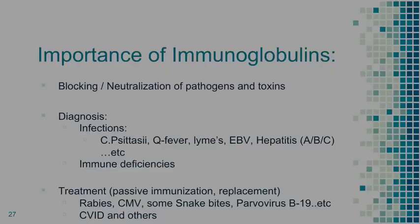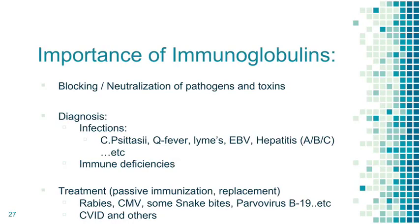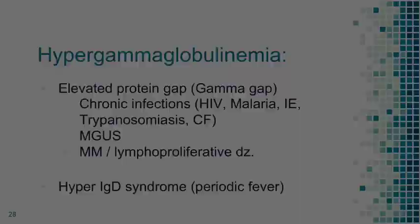The importance of immunoglobulins: they block and neutralize pathogens and toxins. We use them for diagnostic purposes — looking at antibody responses. In immune deficiencies we measure them. For treatment we use passive immunizations when someone needs antibodies acutely — rabies, CMV in transplant, some snake bites, parvovirus B19. We also replace them when someone has low immunoglobulin levels.